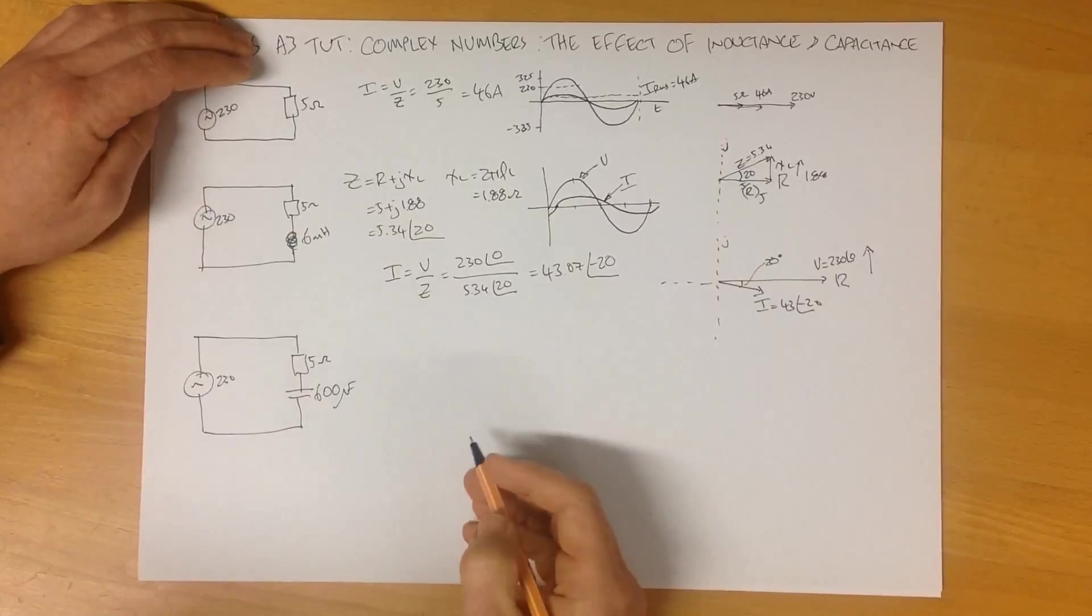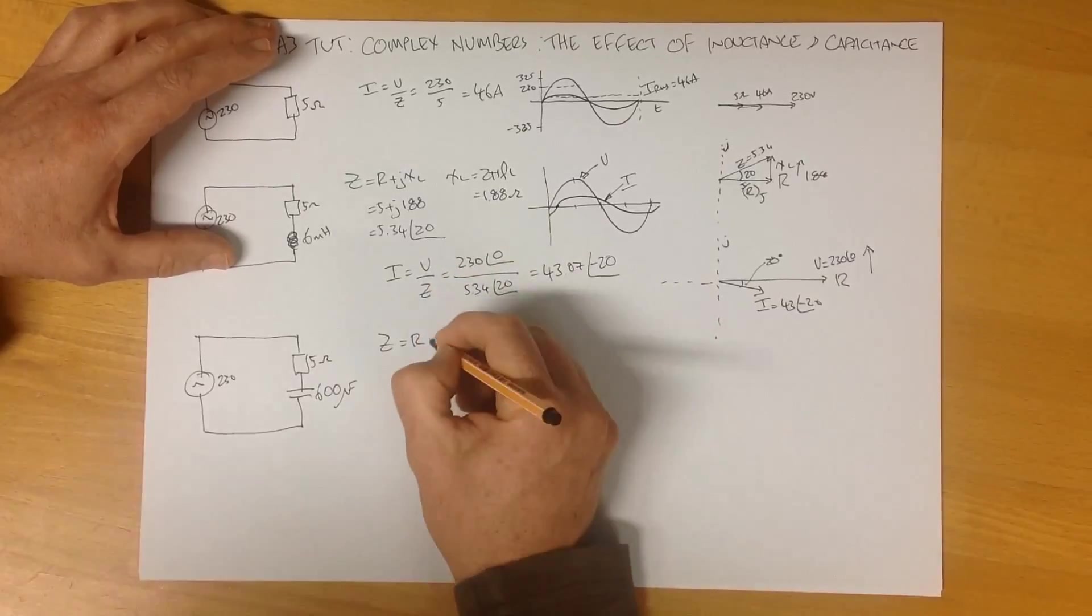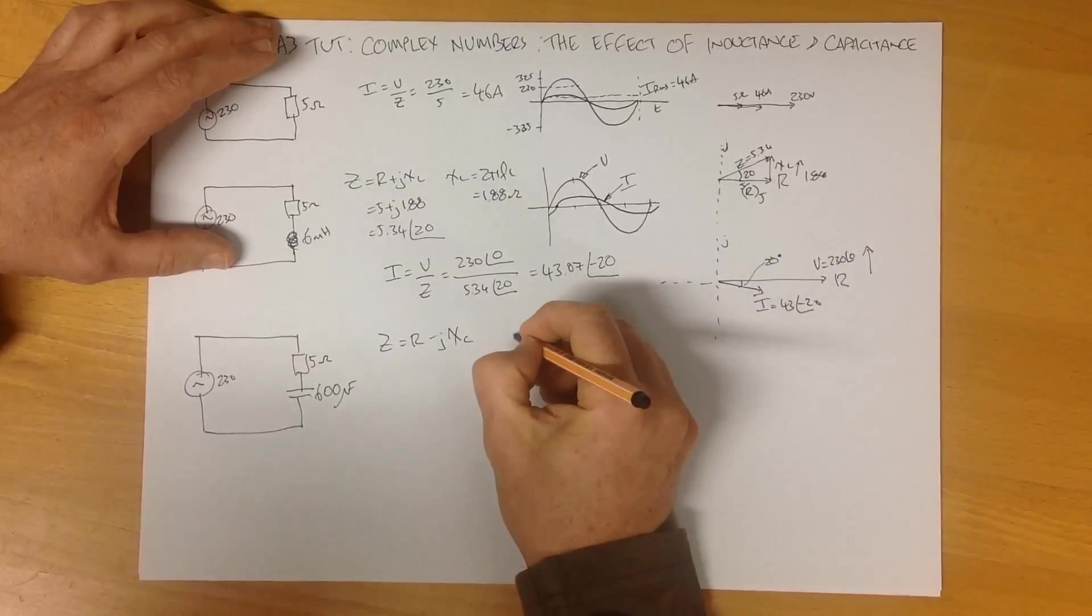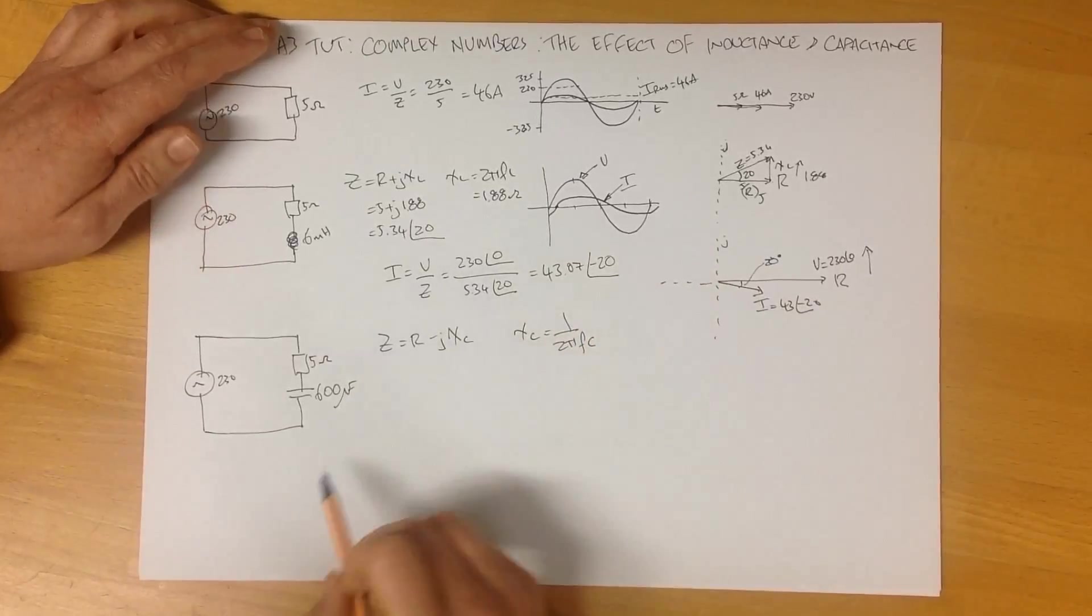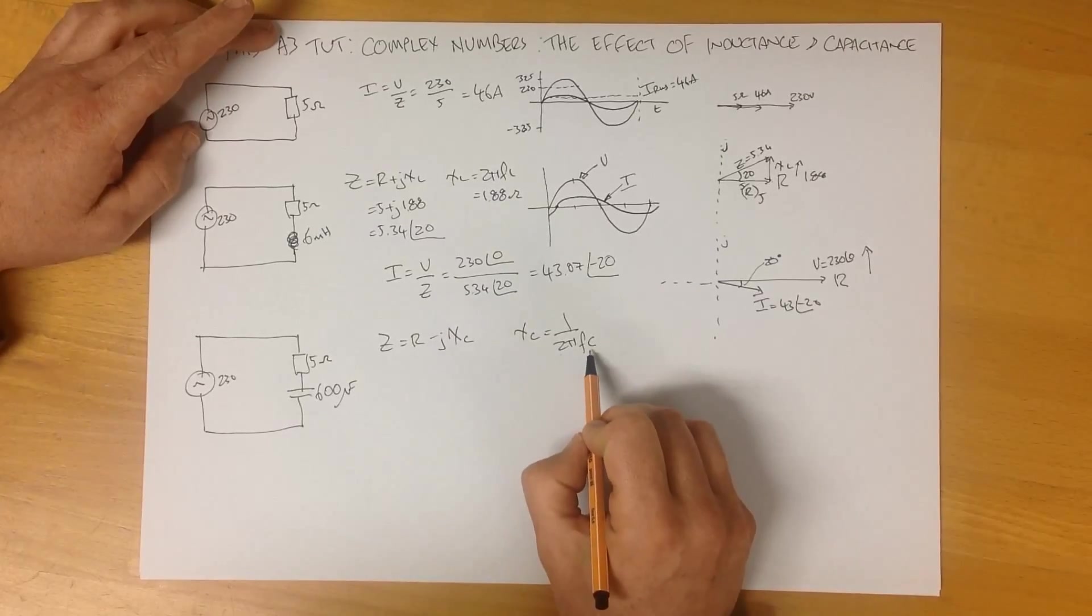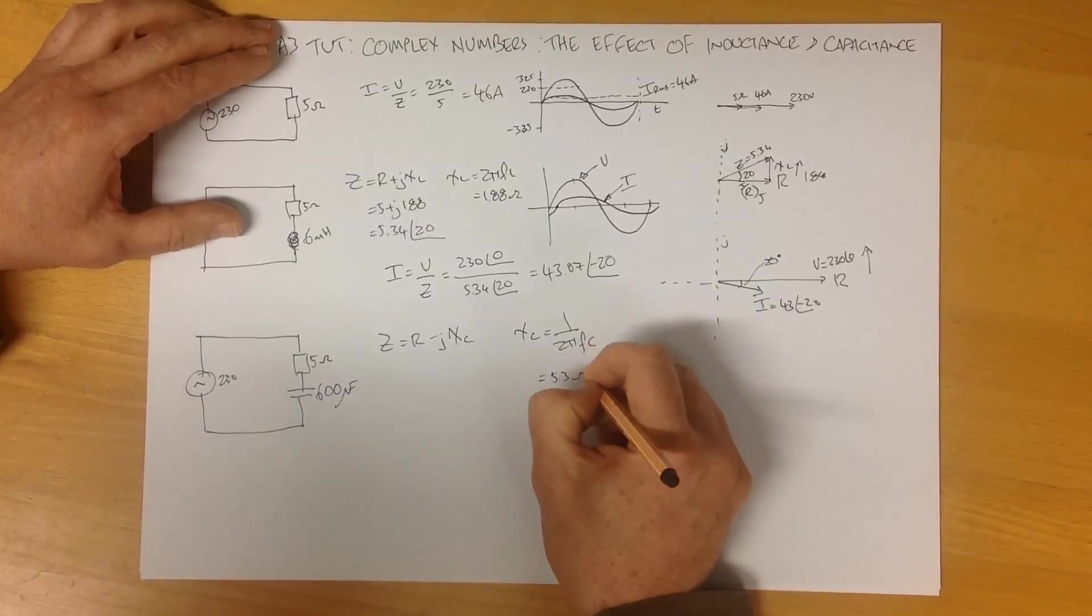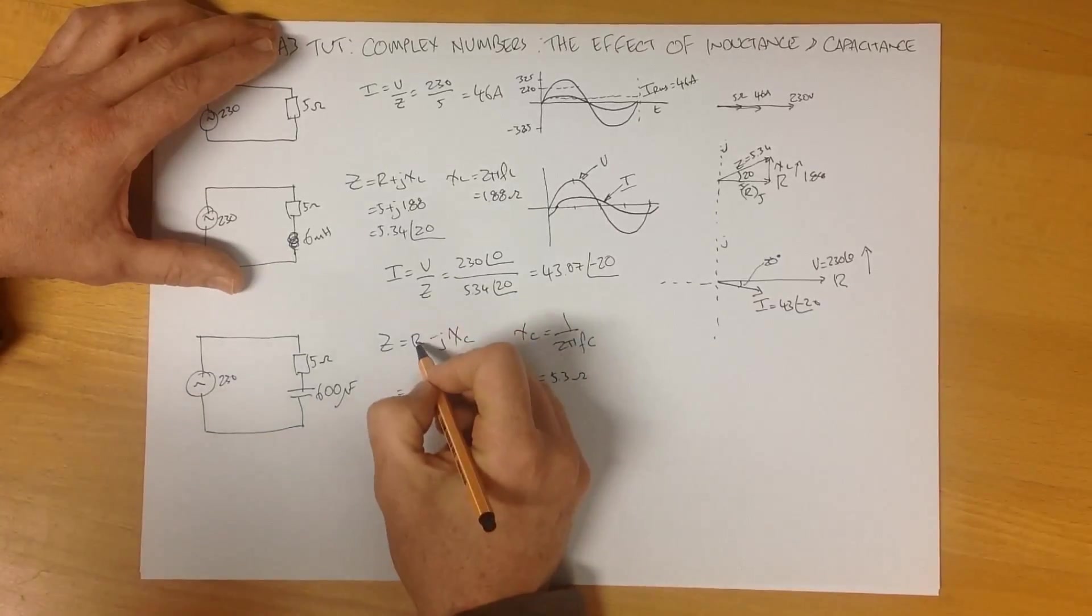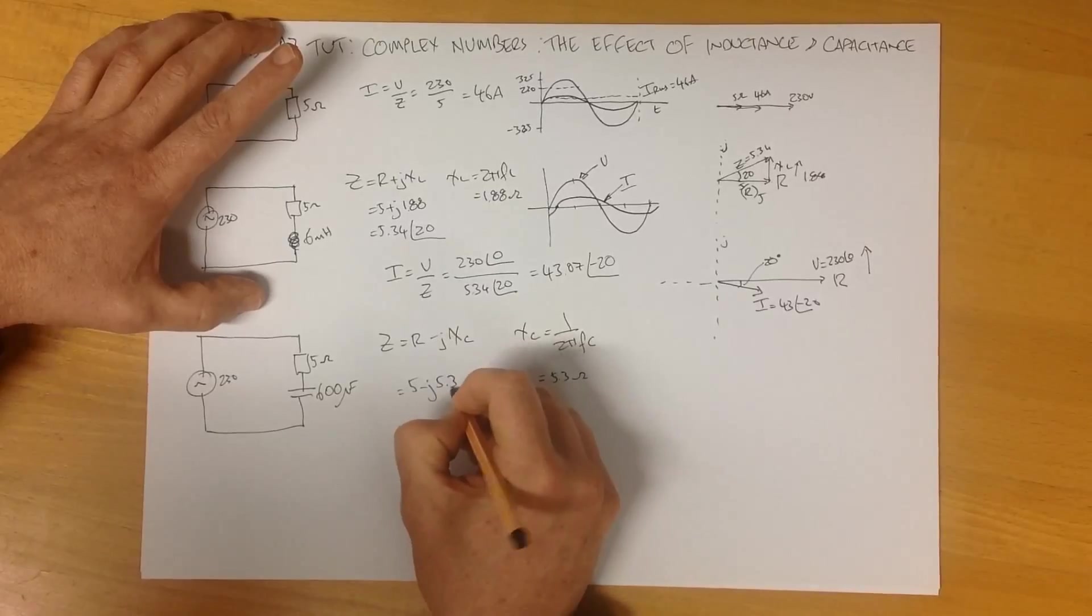We go through the exact same process. Our impedance is R, and our reactive component, so for a capacitor it's minus. Capacitive reactance, 1 over 2 pi fc. At 50 hertz, 600 microfarads, 2 times pi times 50 times 600 times 10 to the negative 6, and that should give us a value of around about 5.3 ohms. We can therefore find out our total impedance, our pure resistance of 5 ohms, our reactive component, 5.3 ohms.